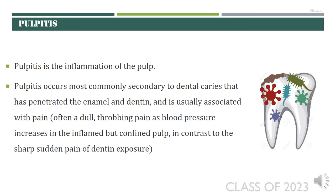Let's begin with the main topic for today — pulpitis. Pulpitis is nothing but inflammatory changes of the pulp, or simply, inflammation of the pulp. Most of the time pulpitis happens as a result of dental caries — it is generally secondary to caries which has spread from the enamel through the dentine to reach the pulp. When there is pulpitis it results in pain, usually dull and throbbing in nature, due to changes in blood pressure causing inflammation of the pulp, which is confined within the dentine.